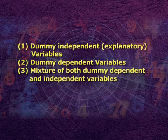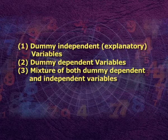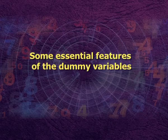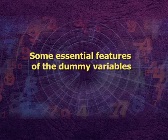Dummy variables occur in practice in three ways: Number 1, dummy independent explanatory variables. Number 2, dummy dependent variables. Number 3, mixture of both dummy dependent and independent variables. At present we want to consider only the first category. Now, some essential features of the dummy variables. Number 1: if a qualitative variable has m categories or classes, then include m minus 1 dummy variables. If this is not observed, there is multicollinearity in the model. Such a situation is called the dummy variable trap.